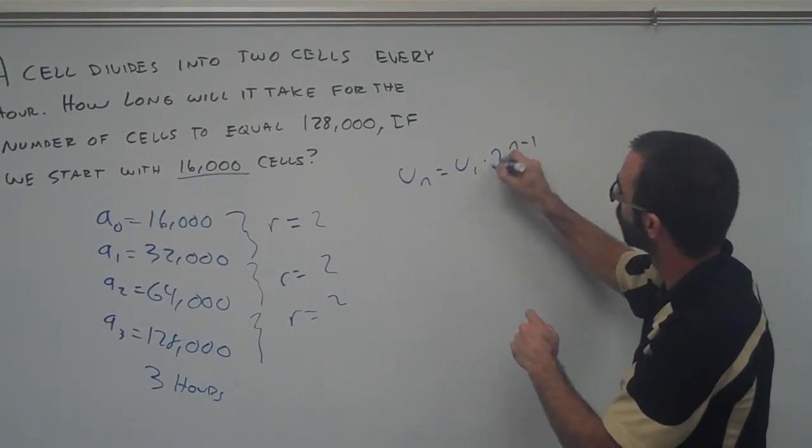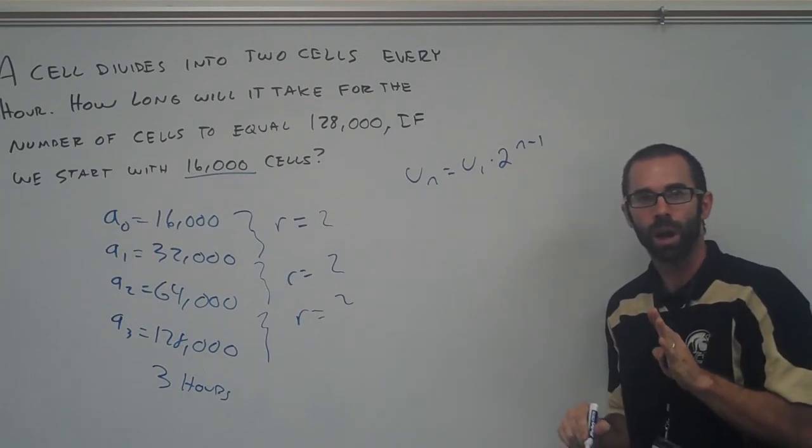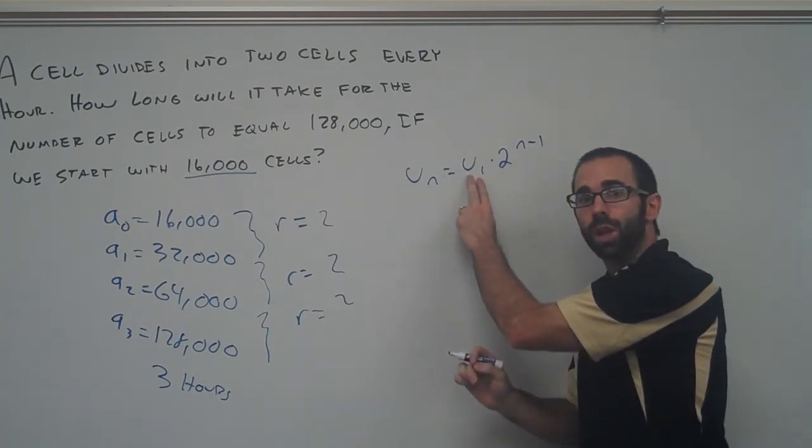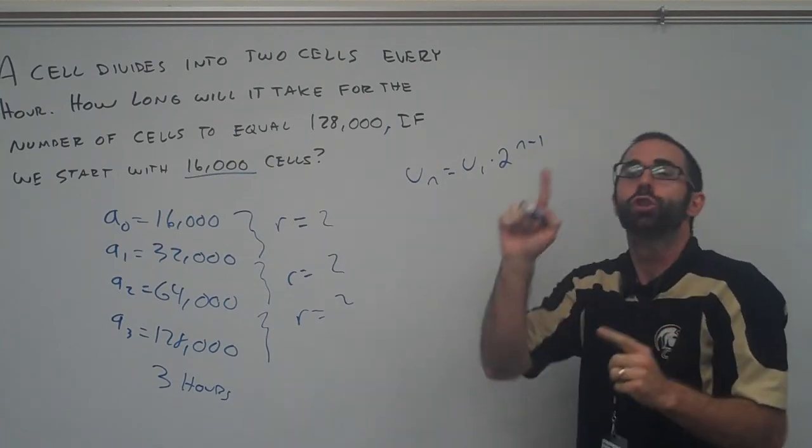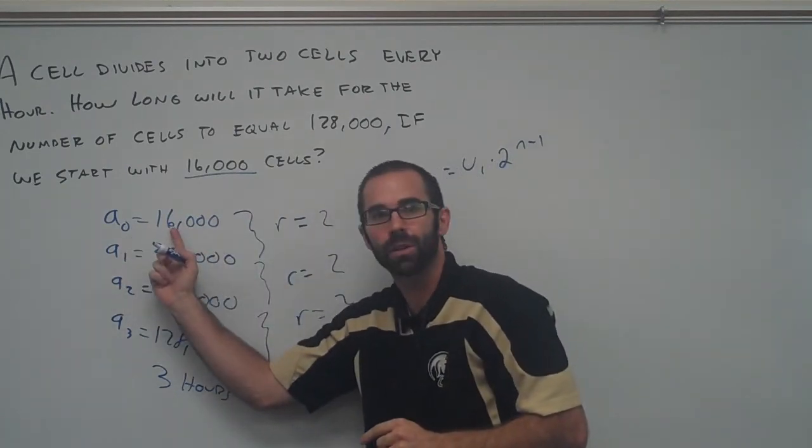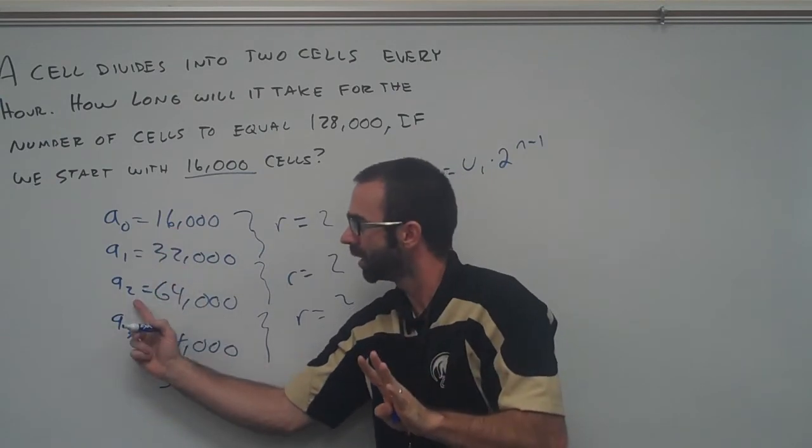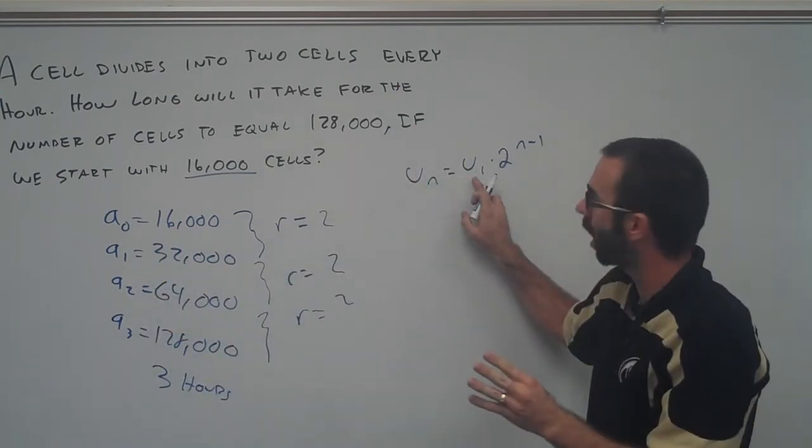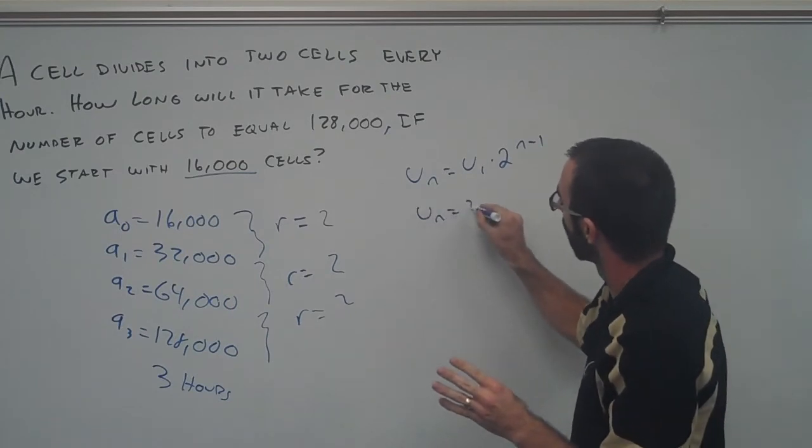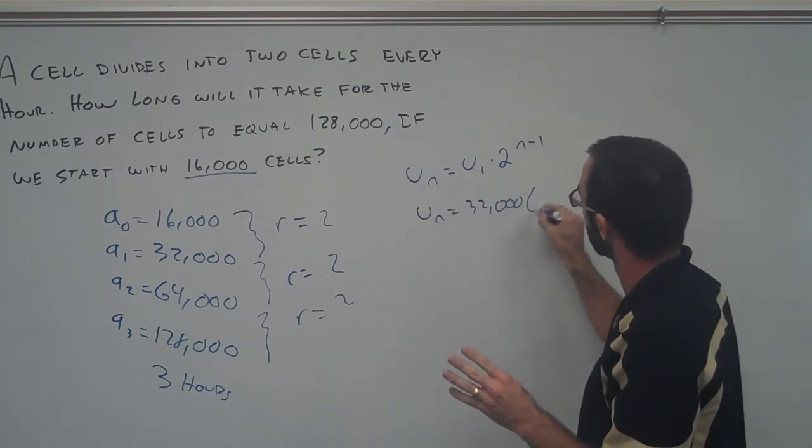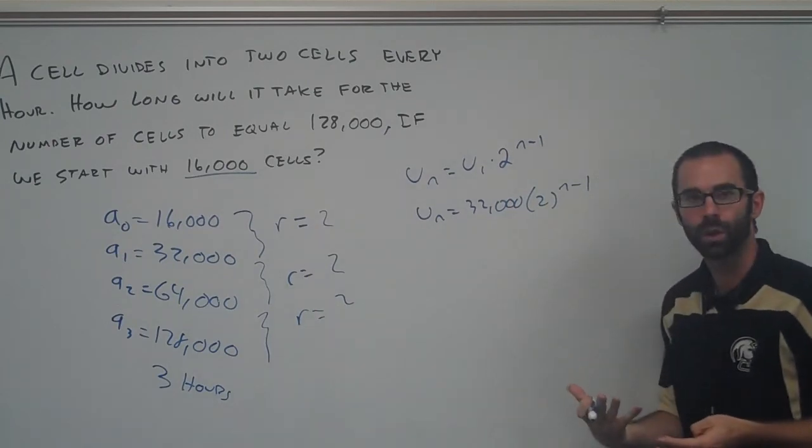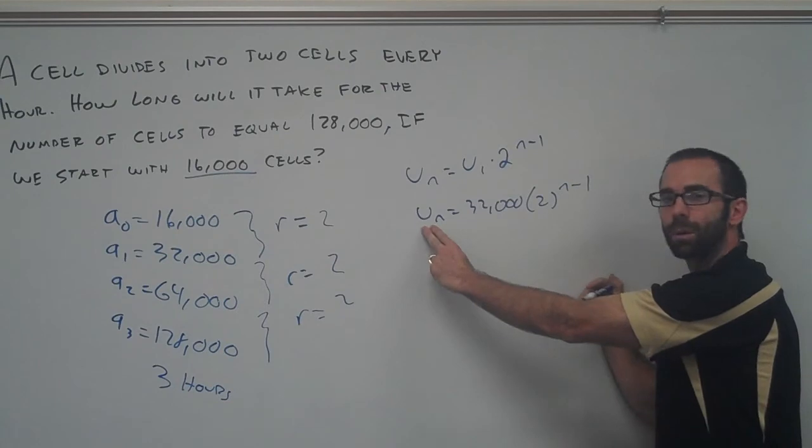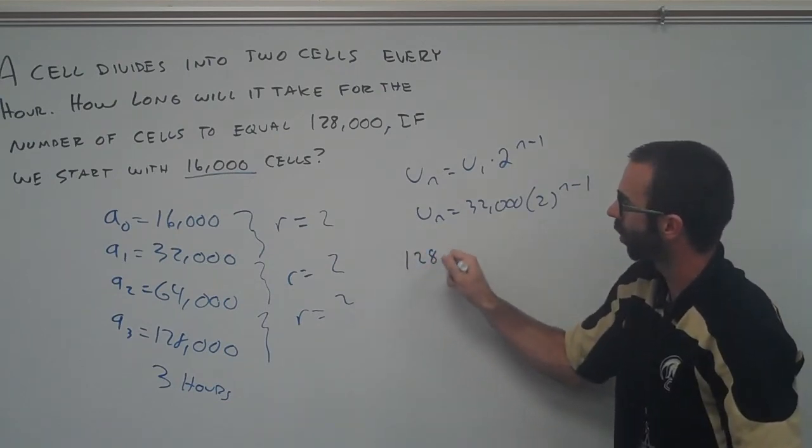So I'm going to replace my R with 2 and here's where we start to get a little trickery. This right here stands for U sub 1 or our first term. So really, our first term is not 16,000. Our first term would have been 32,000. So that's what we want to put for our first term. So U sub N equals 32,000 times 2 to the N minus 1. And so now the question is, when will this whole entire thing be equal to 128,000?